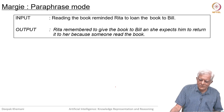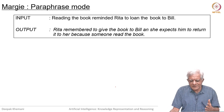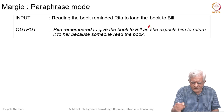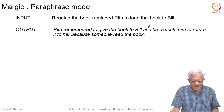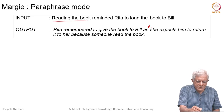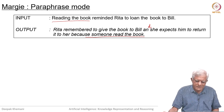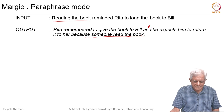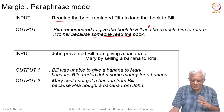Reading the book reminded Rita to loan the book to Bill. Rita remembered to give the book to Bill and she expects him to return it to her because someone read the book. It is a bit incoherent, but she expects him to return the book because that is the meaning of the word 'loan'. The fact that reading the book reminded Rita has been translated as 'someone read the book', though we as humans would infer that Rita was reading the book. These are somewhat ad hoc inferences designed to illustrate that all this can be done.